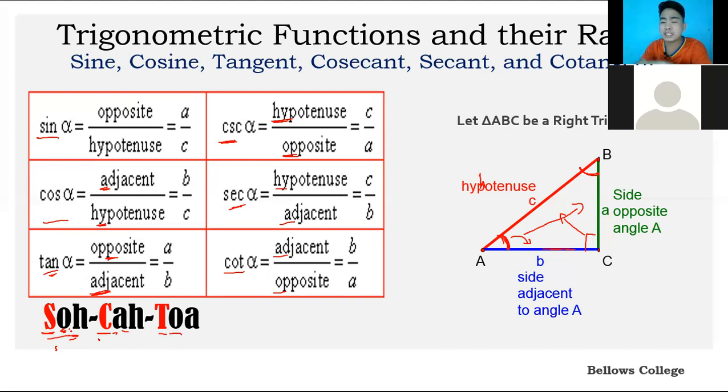For the remaining three trigonometric functions, we have CHOSHACAO. As you can see, the OH in sine becomes HO here, because sine and cosecant are inverses—they're reciprocals. That's why it's A over C here and C over A there. Same goes with cosine and secant, and tangent and cotangent.